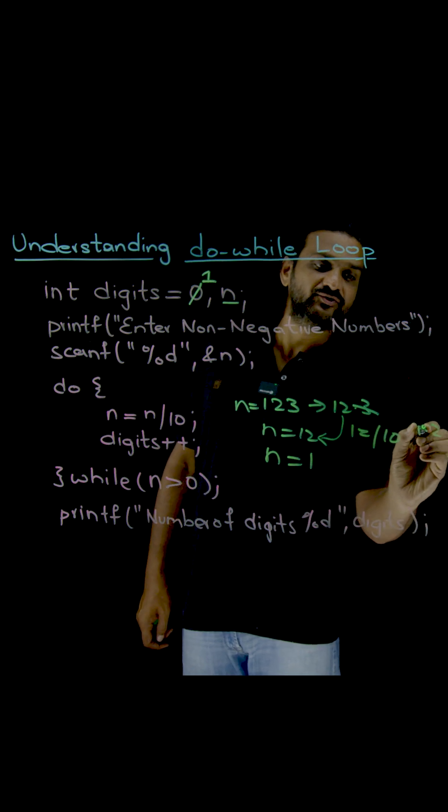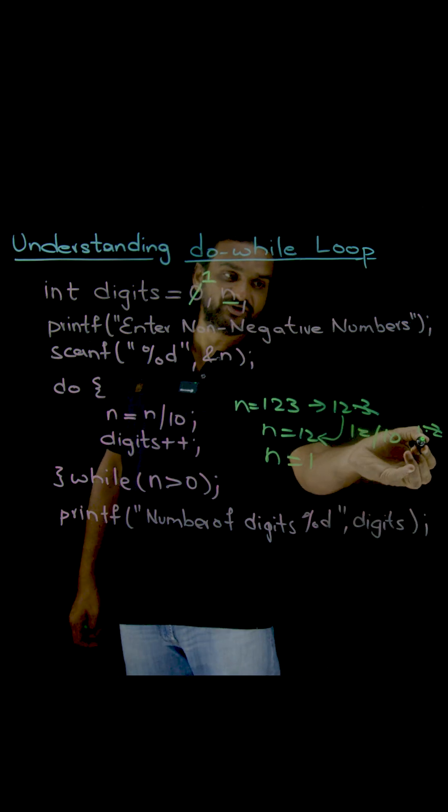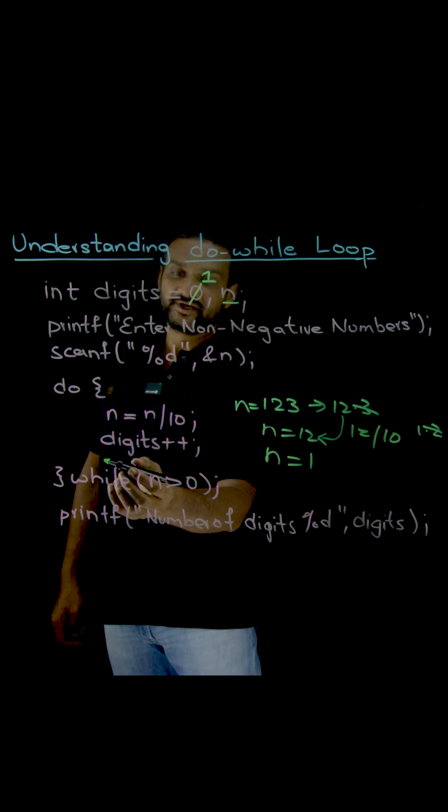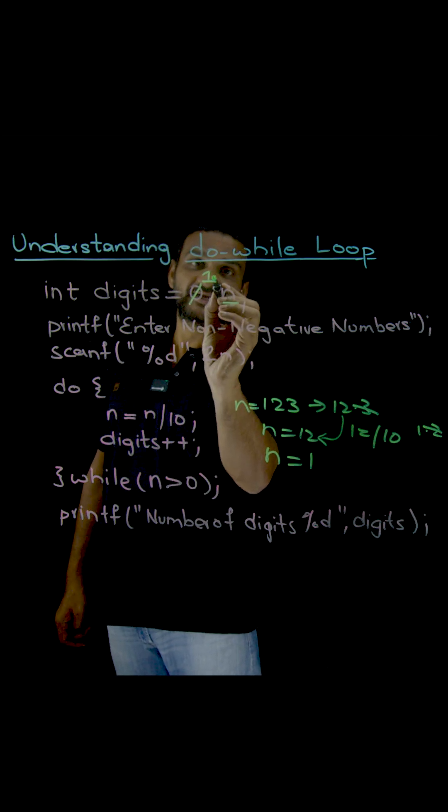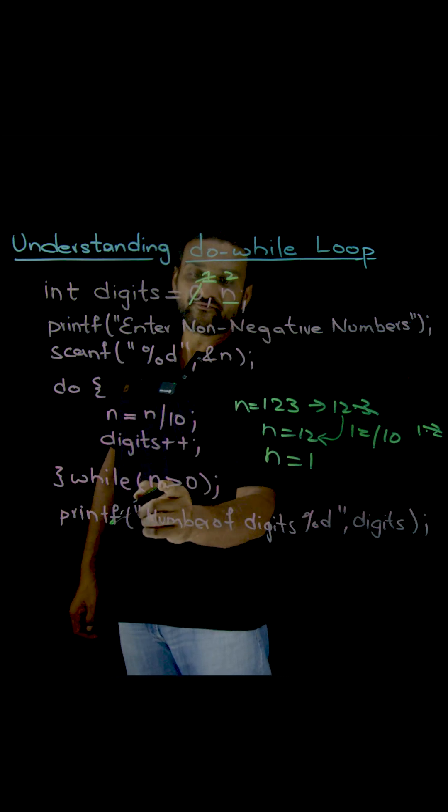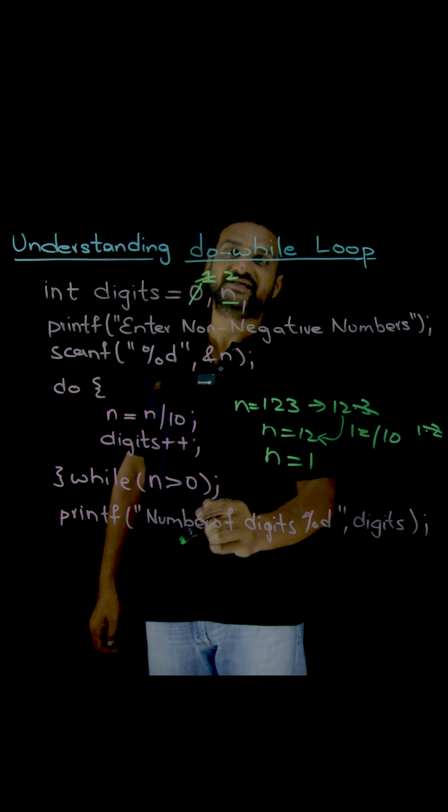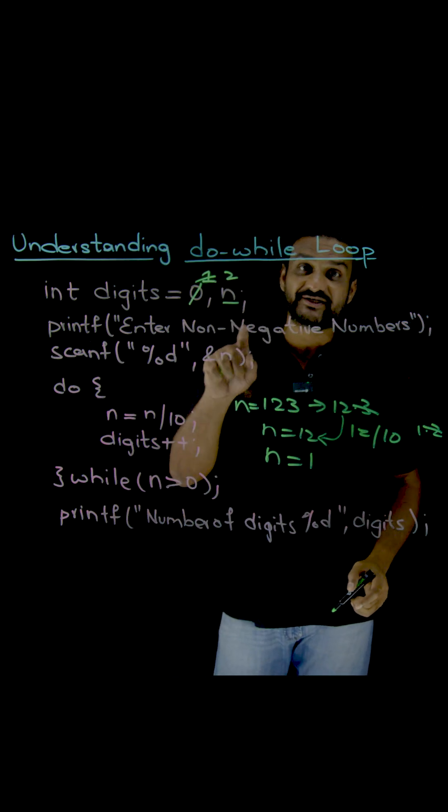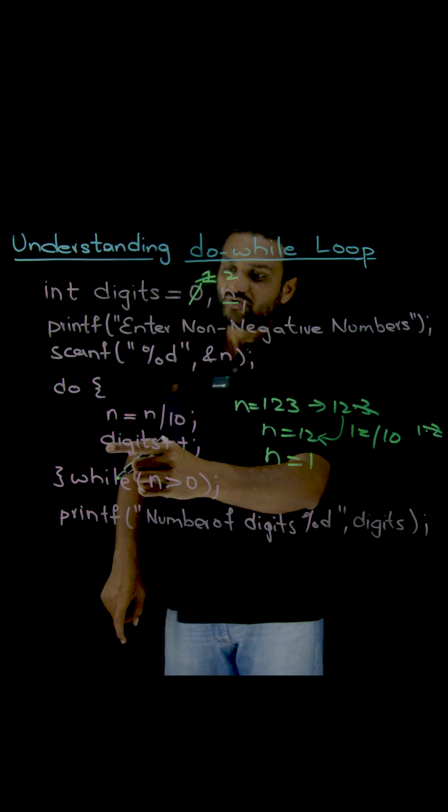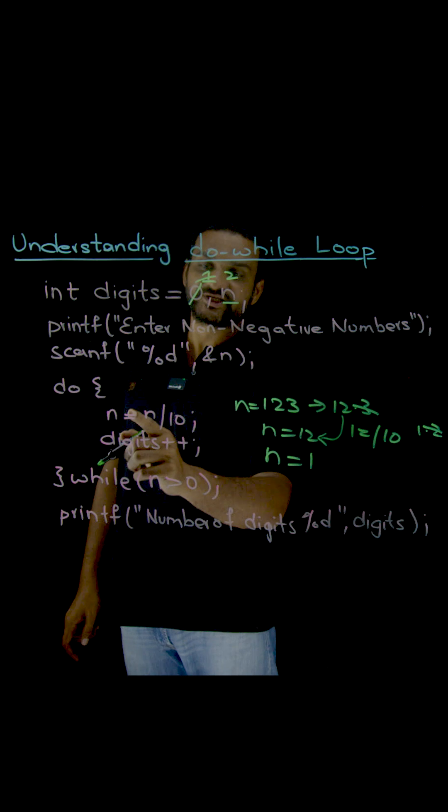is equal to 1.2. This one will get discarded. So the new value of n is equal to 1. Now digits will be incremented, so the number of digits will become 2. Now we are going to compare 1 greater than 0. Is it true? Yes, it is true. So again the body of the loop will get executed.